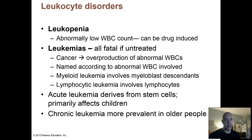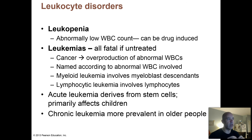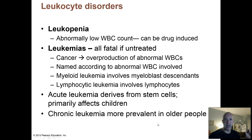Acute means it's very rapid — the cells are dividing out of control and will generally kill the patient much more quickly if not treated. Chronic leukemias are slower and take a longer period of time to progress. Sometimes they don't even treat you for a while with a chronic leukemia because they progress so slowly, though eventually you get to the point where treatment is needed.